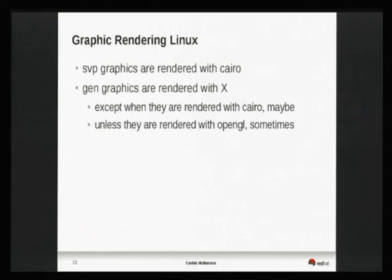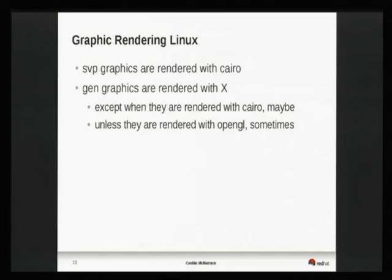Under graphic rendering, the SVP — that headless backend used by GTK3 — pretty much all of that has now been re-implemented to render its graphics with Cairo. This is the 2D rendering, the simple rendering, the fallback if you don't have OpenGL. With GTK3, we haven't even implemented any of the OpenGL stuff yet. The generic X11 graphics are rendered with X calls, except some cases where you can render with Cairo. And then all that OpenGL stuff is rendered with OpenGL, the fallback being X.